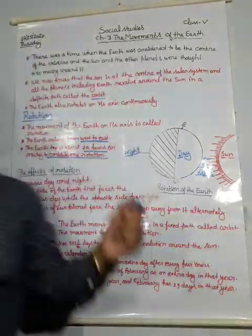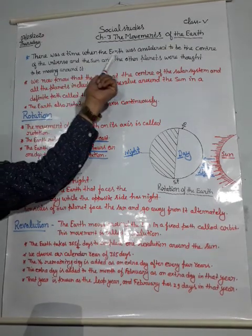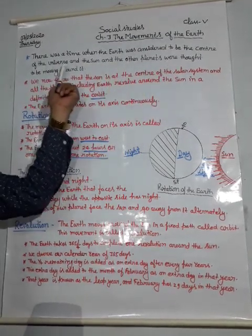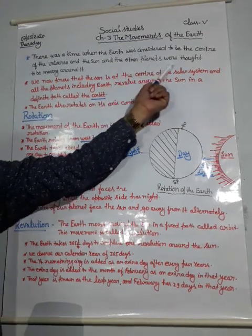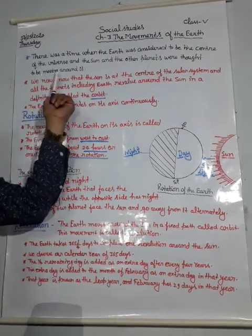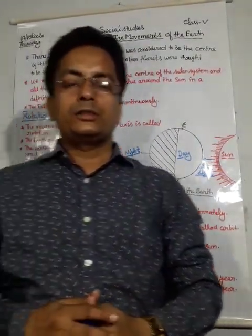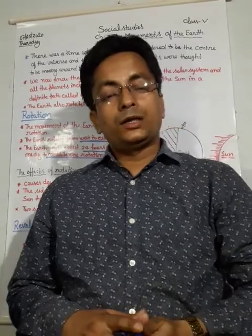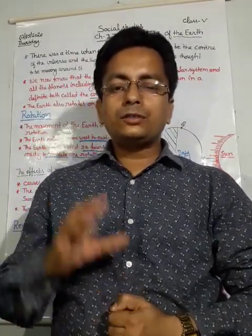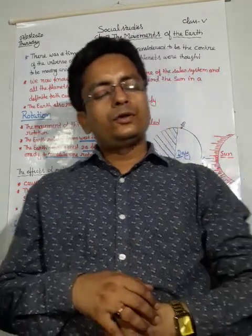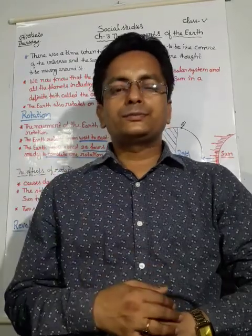There was a time when the earth was considered to be the center of the universe, and the Sun and the other planets were thought to be moving around it. In earlier times, when we didn't have knowledge, we believed that the earth was the center and the Sun and other planets moved around it.